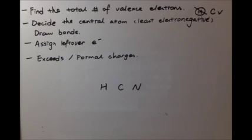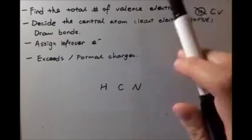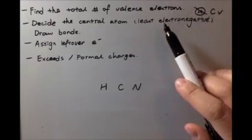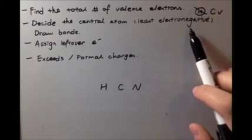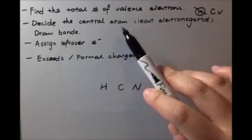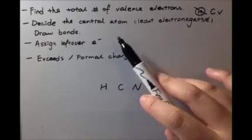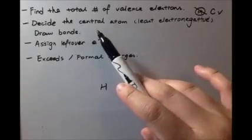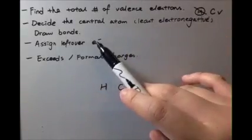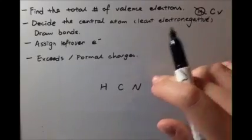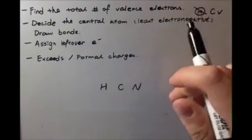Let's do covalent bonds. These are the steps we need to follow. First, find the total number of valence electrons. Then decide the central atom, which will normally be the least electronegative — it will never be hydrogen, but a lot of the time it will be carbon. Then draw the bonds; remember, each bond represents two electrons. After that, assign the leftover valence electrons after subtracting the electrons already used in bonds. Count the leftover electrons to make sure all electrons are placed in and that they fulfill the octet rule.